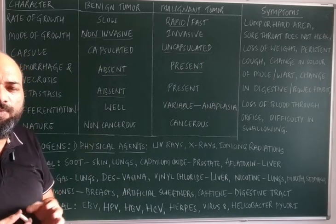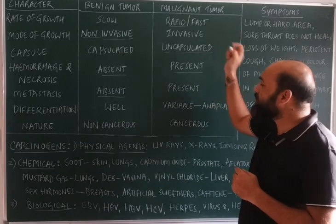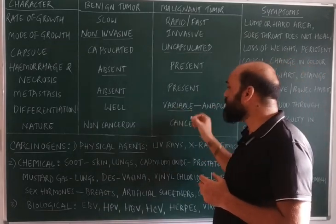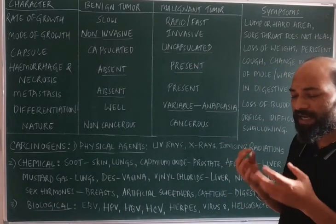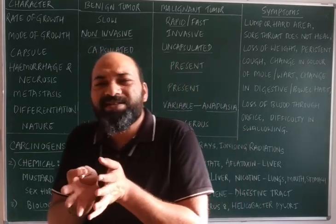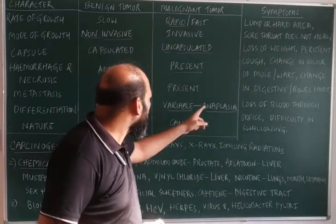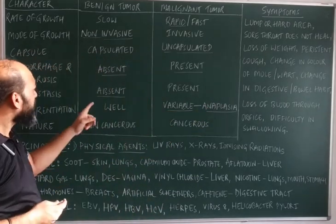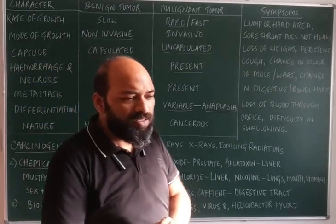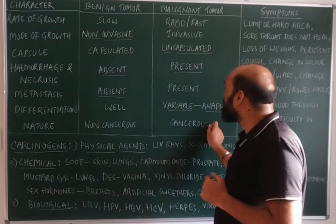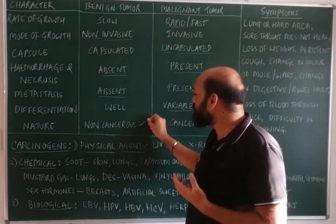The next difference is differentiation. In benign tumors, the cells are able to differentiate normally. In malignant tumors, the cancer cell differentiation is variable. Due to this variability, malignant tumors are known to exhibit anaplasia — a condition where matured cells come out of the tumors and result in the formation of a neoplasm. Anaplasia is seen only in malignant tumors and is absent in benign tumors.